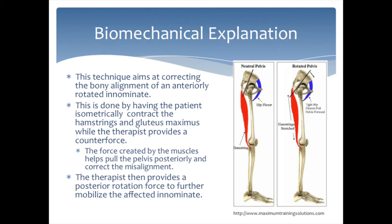This technique aims at correcting the bony alignment of an anteriorly rotated innominate. This is done by having the patient isometrically contract the hamstrings and gluteus maximus while the therapist provides a counterforce. The force created by the muscles helps pull the pelvis posteriorly and correct the misalignment. The therapist then provides a posterior rotation force to further mobilize the affected innominate.